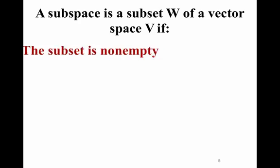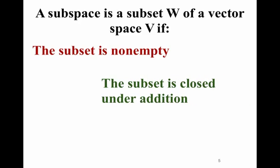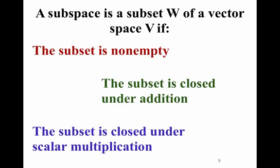A subspace is a subset W of a vector space V if the subset is not empty, the subset is closed under addition, and the subset is closed under scalar multiplication. We say a subset is a subspace if it has these three properties. First, there has to be something in it. Closed under addition means that if you add two things in that subset, you get something else in the subset. And closed under scalar multiplication means that if you multiply any vector in that subset by a scalar, the stretching or shrinking of it does not take it outside of that subset.